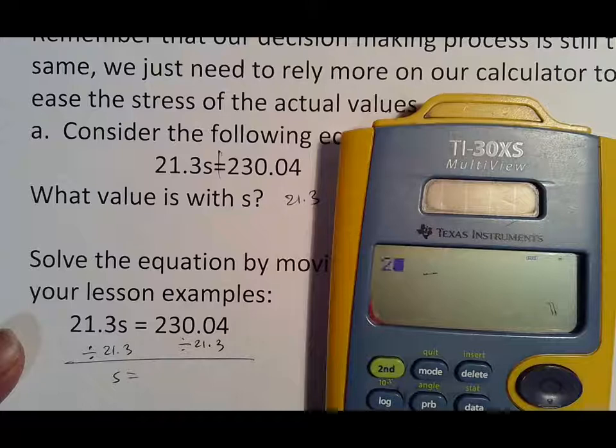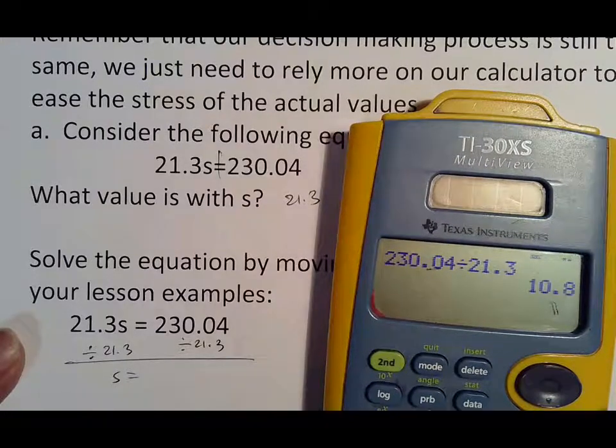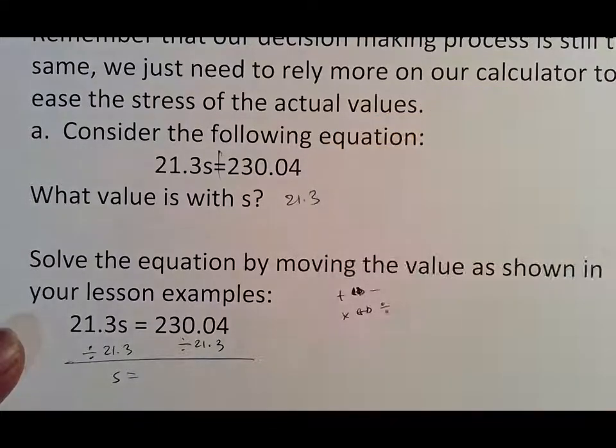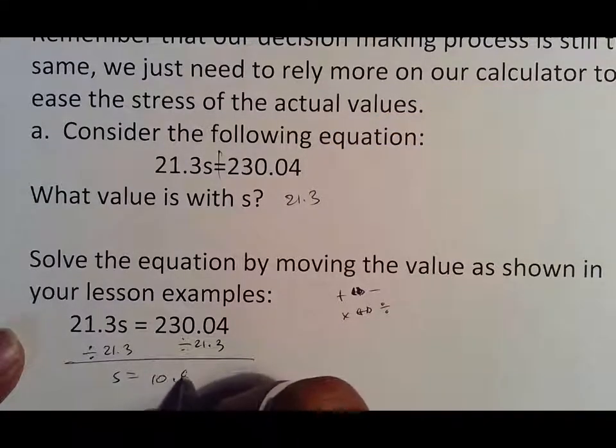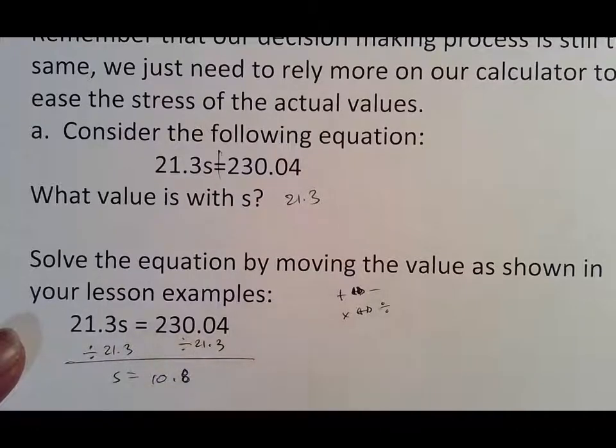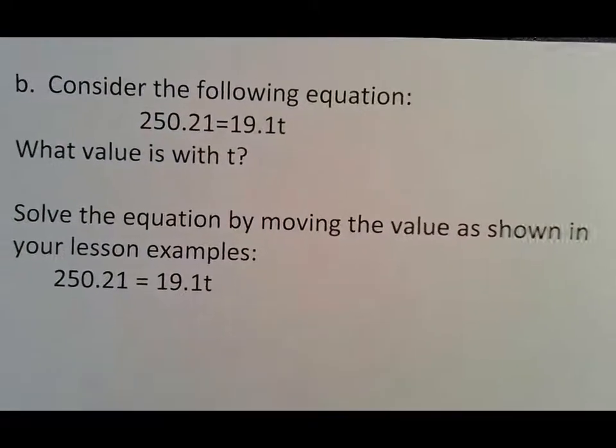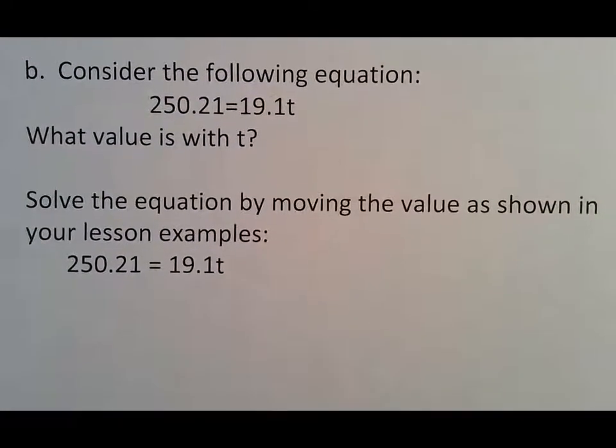I believe you just round to that number there. 230.04 divided by 21.3. There you go. 10.8. And so that would be what you do. There's your four boxes. I don't think I need to go over all that. It's just pretty much what you did last week with multiplication and adding decimals to it. So this is going to be a little faster of a video because there's really not a lot of explanation that you should need.